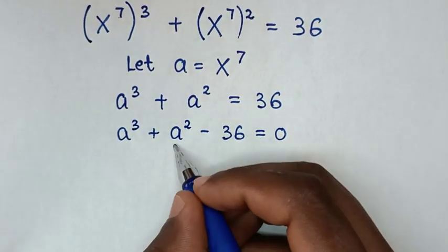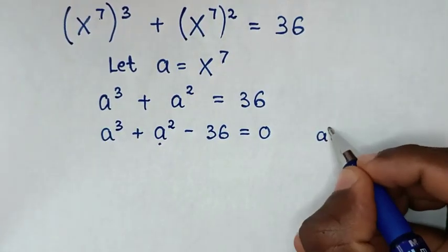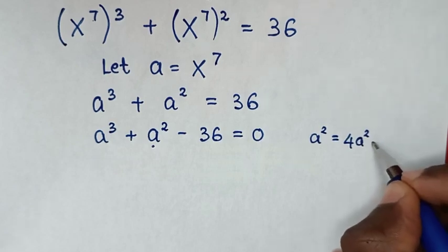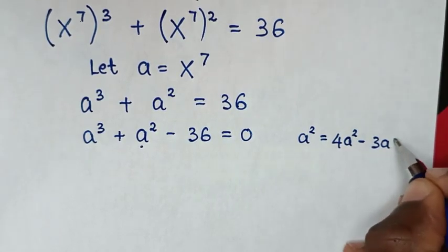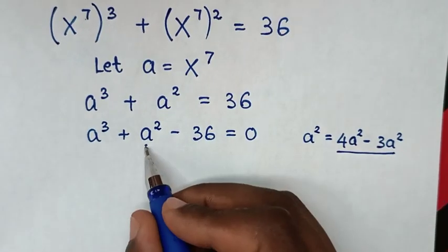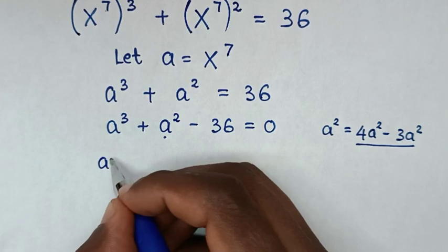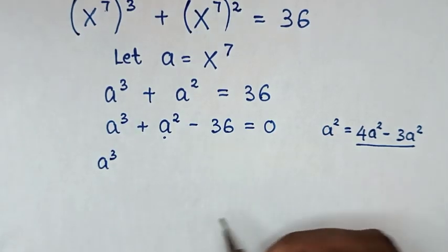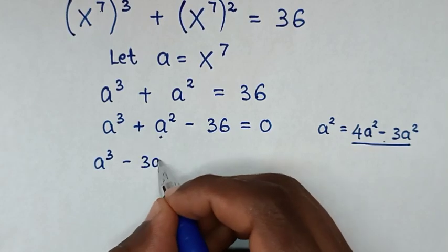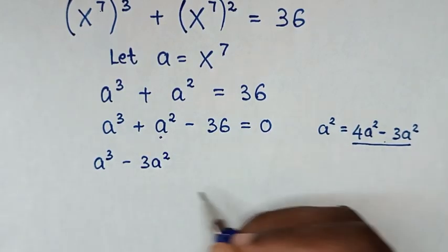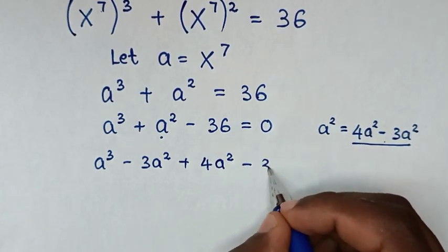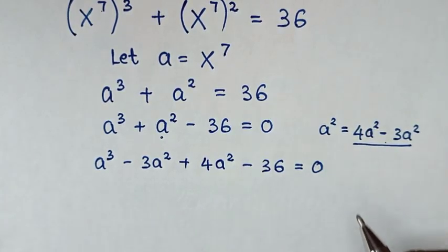From here, a power of 2 is rewritten as 4a squared minus 3a squared. We substitute this in, so our equation becomes a power of 3, minus 3a squared, plus 4a squared, minus 36, is equal to 0.